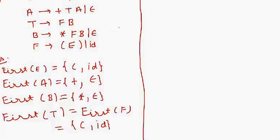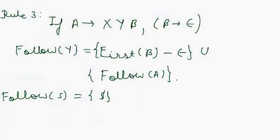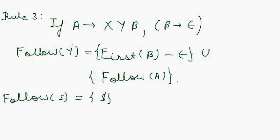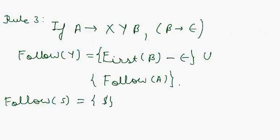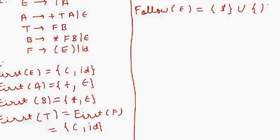Now we will calculate the Follow Set. First we calculate Follow of E, which is the start symbol. By convention, the Follow of the start symbol always begins with dollar. Additionally, E is also followed by close bracket in the production F gives open bracket E close bracket, so Follow of E equals { $, ')' }.